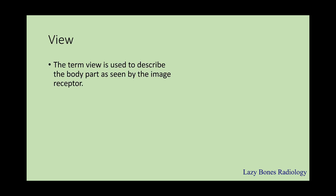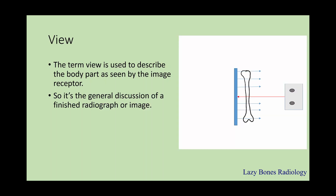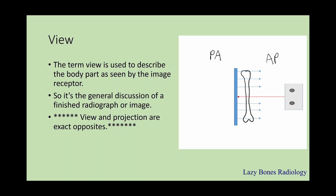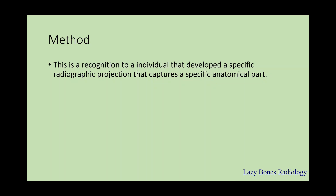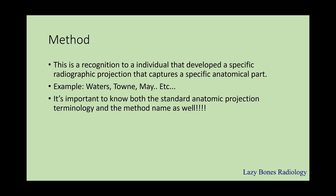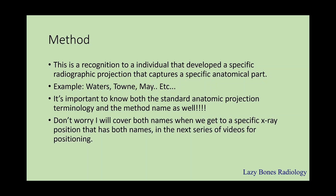Next is the view. The term view is used to describe the body part as seen through the image receptor, so the view is the general discussion of a finished radiograph or image. A side note: view and projection are exact opposites. So if your projection is an AP projection, your view is a PA and vice versa. Method: this is a recognition of an individual that developed a specific radiographic position to capture a specific anatomical part — for example, Waters, Towne, and May. It is important to know both the standard anatomical position terminologies and the method name. I'll cover both names when we get to the specific x-ray positions in the next series of videos.